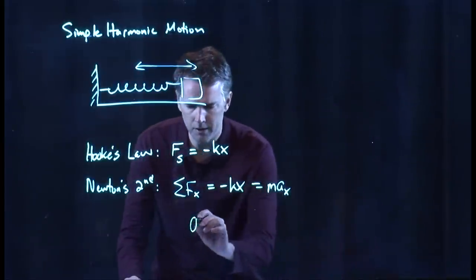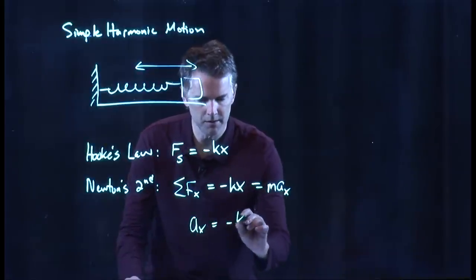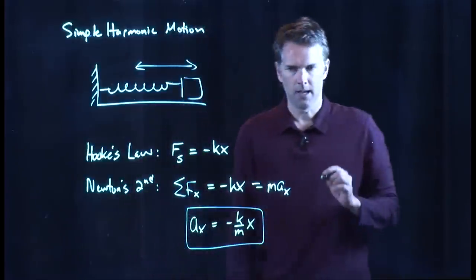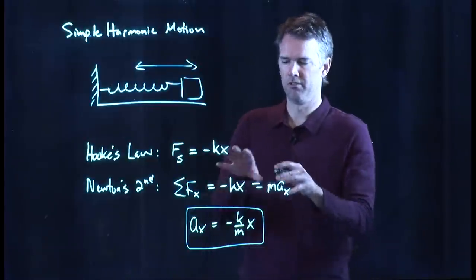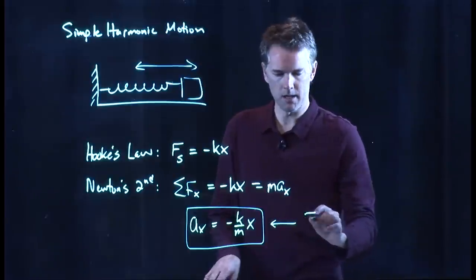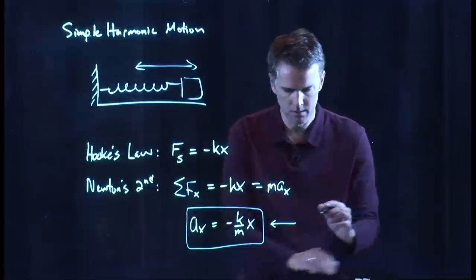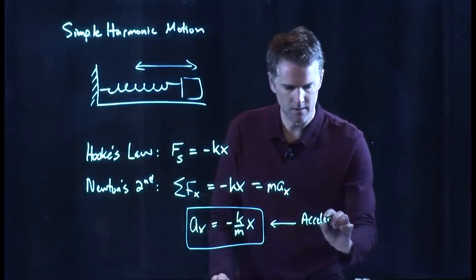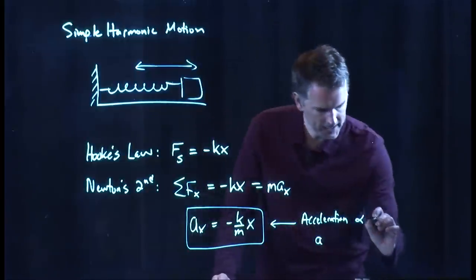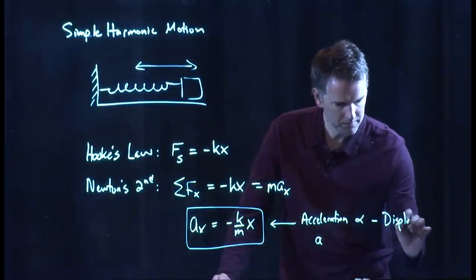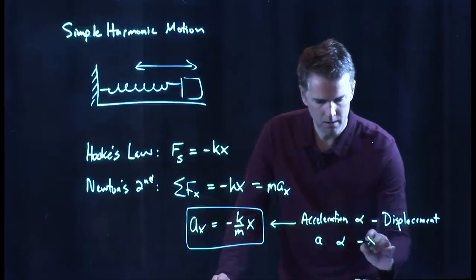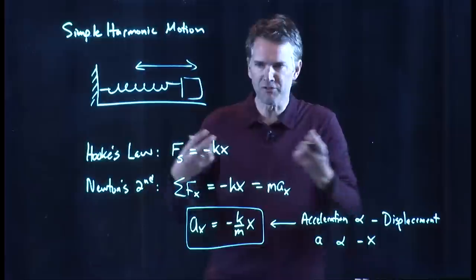We can solve this equation now for acceleration. Acceleration is negative k over m times x. And this is the basis for simple harmonic motion. Simple harmonic motion is when the acceleration is proportional to the negative of the displacement.